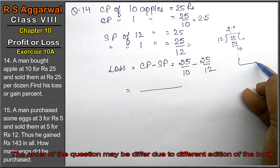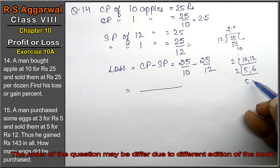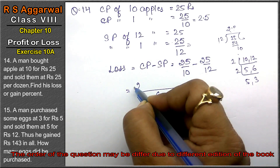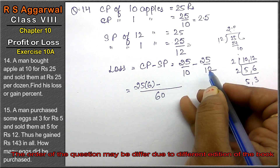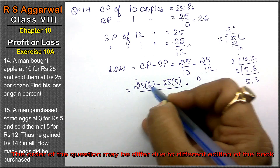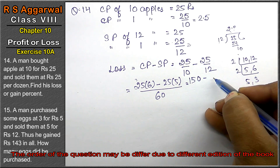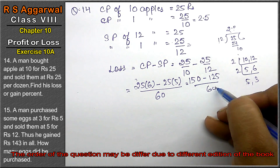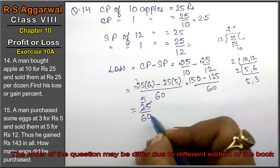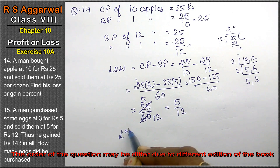Now take the LCM of 10 and 12. LCM comes to 60. So loss equals 25×6 minus 25×5 upon 60, which gives 150 minus 125 upon 60 = 25 upon 60. Simplifying by 5, loss per apple = 5 upon 12.